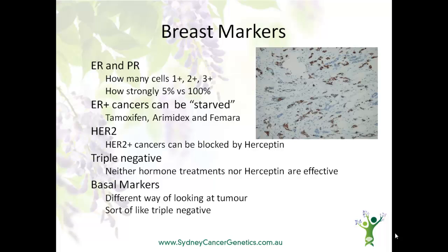The third receptor of importance is the HER2 receptor, as it can be blocked by targeted therapies such as Herceptin, again starving any cancer cells. Triple negative cancers do not stain positive for the ER, PR or the HER2 receptors. Because hormonal and HER2 targeted therapies are unlikely to work against this kind of cancer, chemotherapy is often recommended to give the best chance of cure. In some centres, basal markers will also be assessed — this is just a different way of looking at the tumour. Triple negative and basal cancers are uncommon. Although they're not exactly the same, many triple negative tumours are also basal tumours. This kind of tumour is more common in people who carry a fault, or a mutation, in the BRCA1 gene. A woman with a triple negative breast cancer should be referred to a genetic oncologist or a familial cancer clinic if she was under the age of 40 at the time the cancer was diagnosed, or if she has a family history of breast or ovarian cancer.